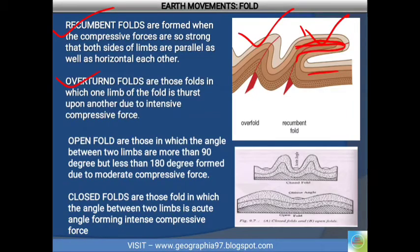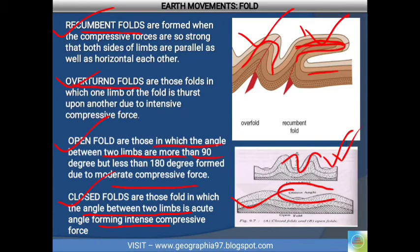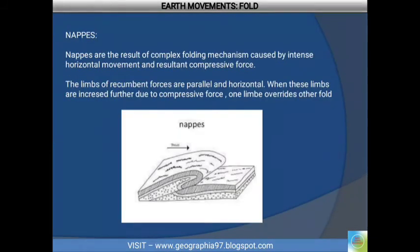An overturn fold is formed when one limb of the fold is thrust upon the other with heavy intensity of compressive force — that is called the overturn fold. In an open fold, the angle between the two limbs is an obtuse angle — more than 90 degrees but less than 180 degrees — formed with moderate intensity of compressive force. A closed fold is when the angle between the two limbs is an acute angle, formed with intensive compressive force.